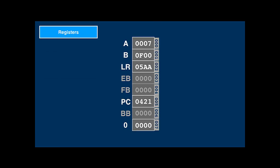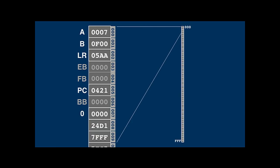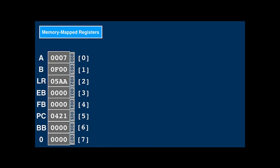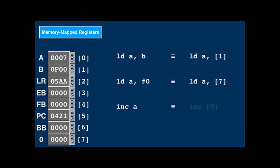The eight registers are numbered — that is, they are assigned memory addresses. This means that the first eight words in memory are actually occupied by the registers and can be accessed using addresses in all instructions that take a memory address. This allows for much greater flexibility in the instruction set. We can load A with the contents of the B register by reading the contents of memory at location 1 into A, or increment A by incrementing memory at zero, and B can be used as a pointer by reading from double-indirect 1.